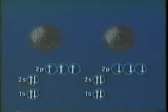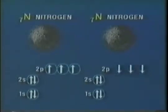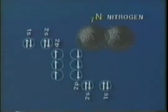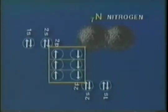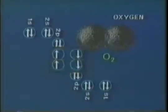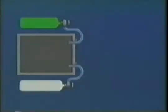Two atoms of nitrogen will also form a bond, but each nitrogen atom requires three electrons to acquire the electron configuration of the nearest inert gas, neon. This can be achieved by sharing three pairs of electrons. The result is a diatomic molecule of nitrogen. The relative strength of a triple covalent bond compared with that of a double or single covalent bond can be illustrated by comparing the way these substances react with hydrogen.